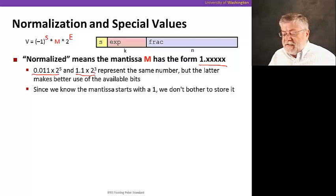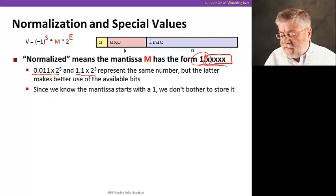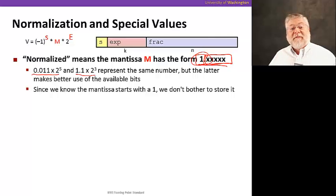And actually, since we know the mantissa's always going to start with that one point at the beginning, we're not even going to bother to store that in our representation. Why waste a bit on something we know is always going to be there? So that's why the fraction doesn't encode the mantissa exactly. The fraction only encodes the binary digits to the right of the binary point. It does not encode the one to the left.